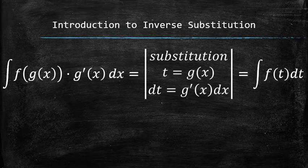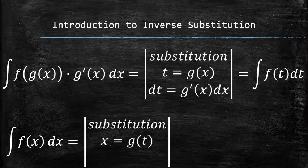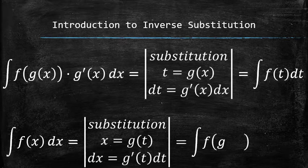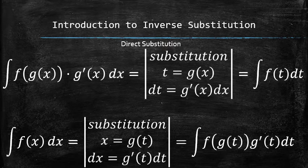So we have nothing but some function of t left in the integrand. It turns out that it is possible to reverse the process and introduce a new variable, let's say t, by setting x to be equal to some function of t. In such a case, we have to find the differential of x and replace every occurrence of x in the original integrand with some expression in terms of t, so to have nothing but some function of t left in the integrand. Due to the nature of the relationship between the two processes, we will refer to the original substitution technique as the direct substitution and the new substitution technique as the inverse substitution.